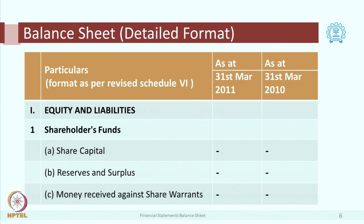Now let us go for a detailed balance sheet. This is the official format as per Schedule 6 of the Companies Act. This particular format was introduced in the year 2011 — that is why I have kept 2010 and 2011 there, because for a corporate balance sheet, two years of data is to be given. So you can see two columns: one for 2010 and the other for 2011. The first item starts with equity and liabilities, and item 1 is shareholders' funds.